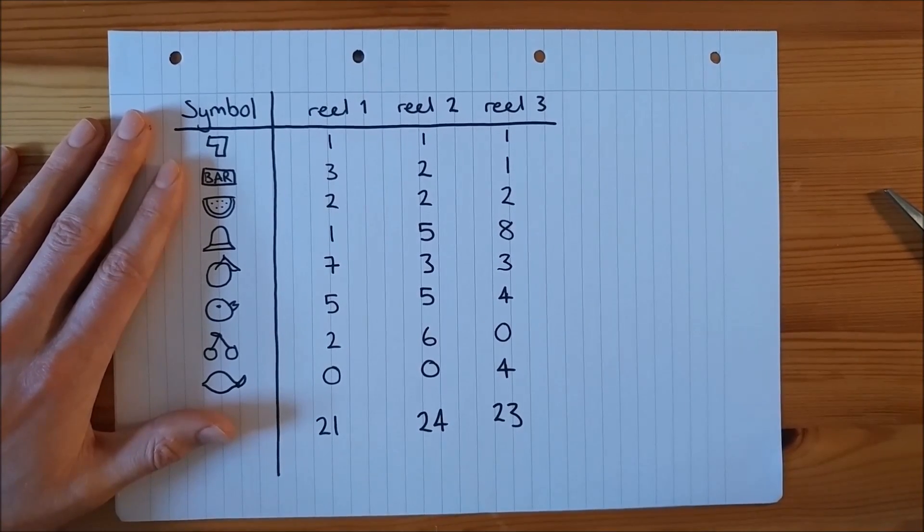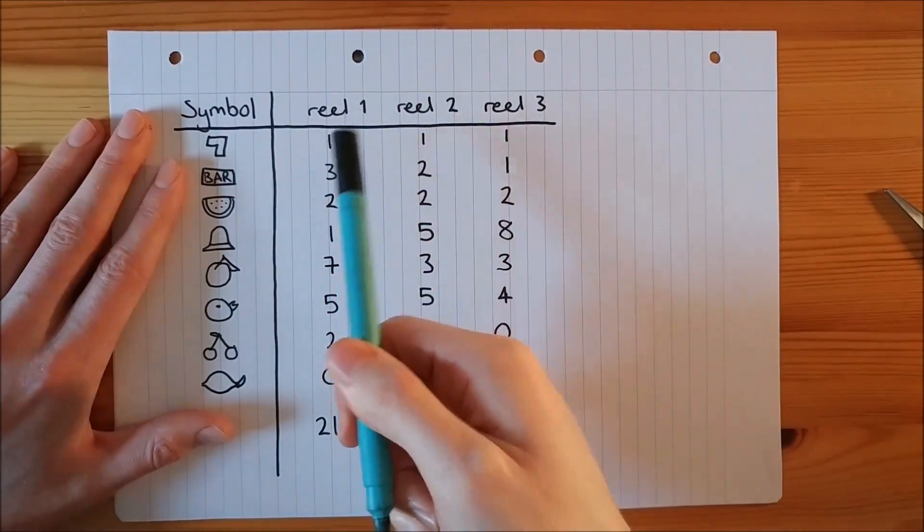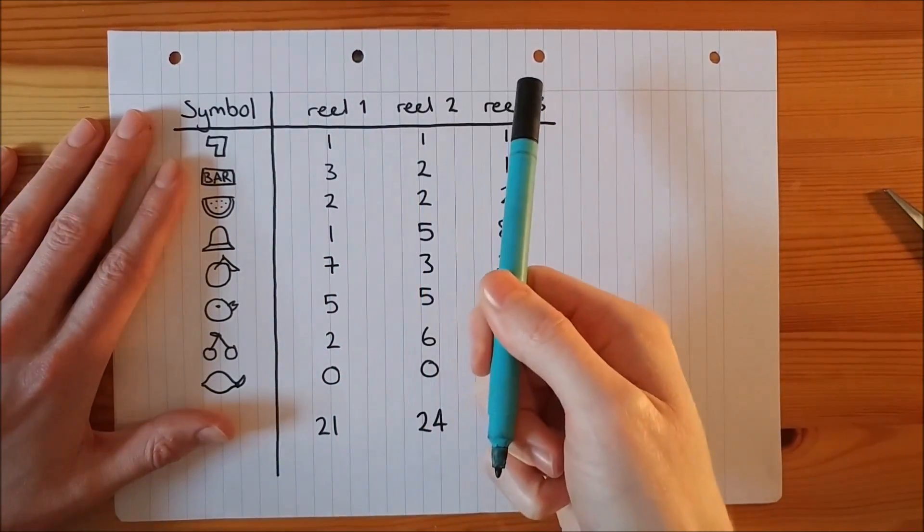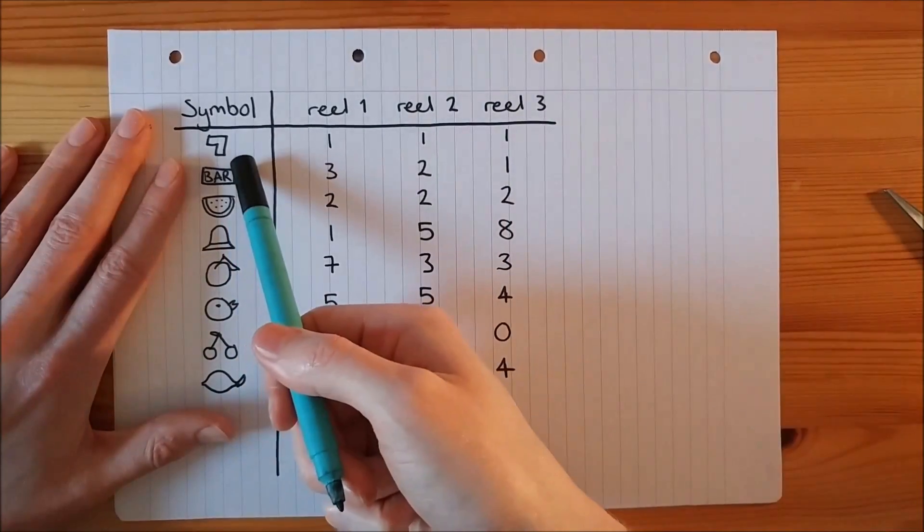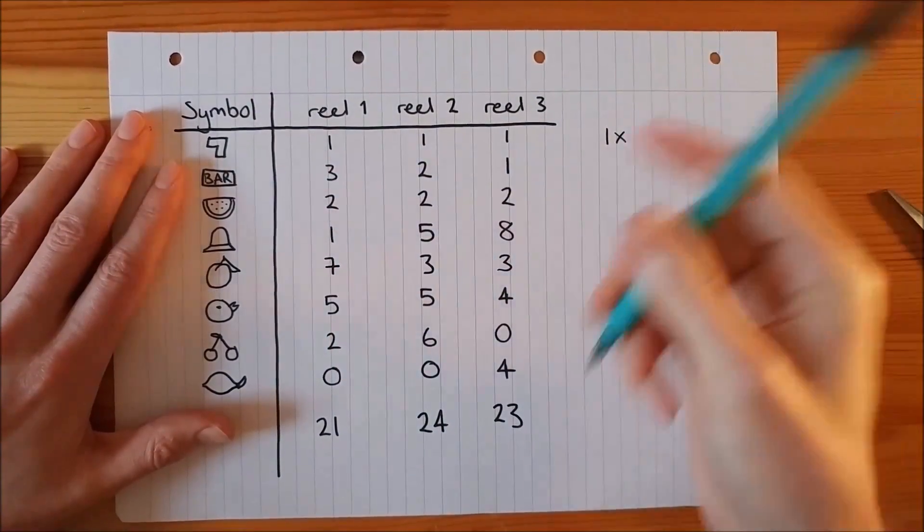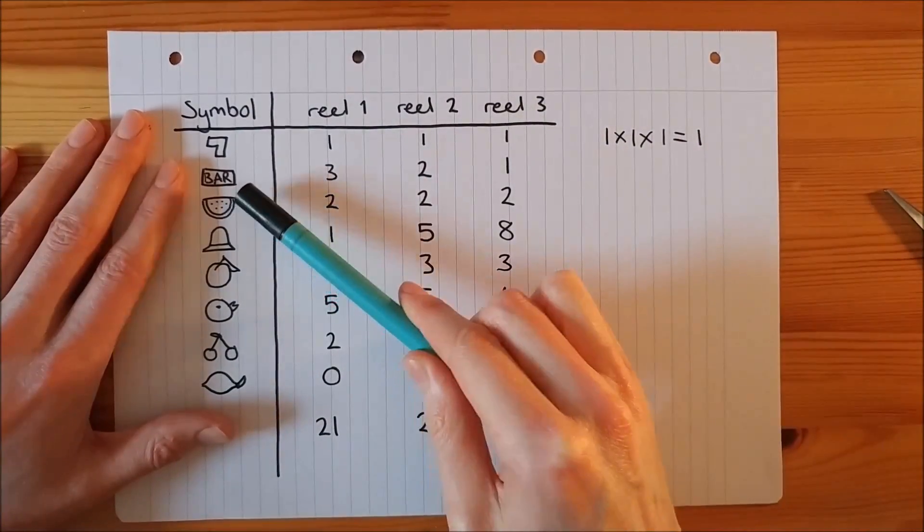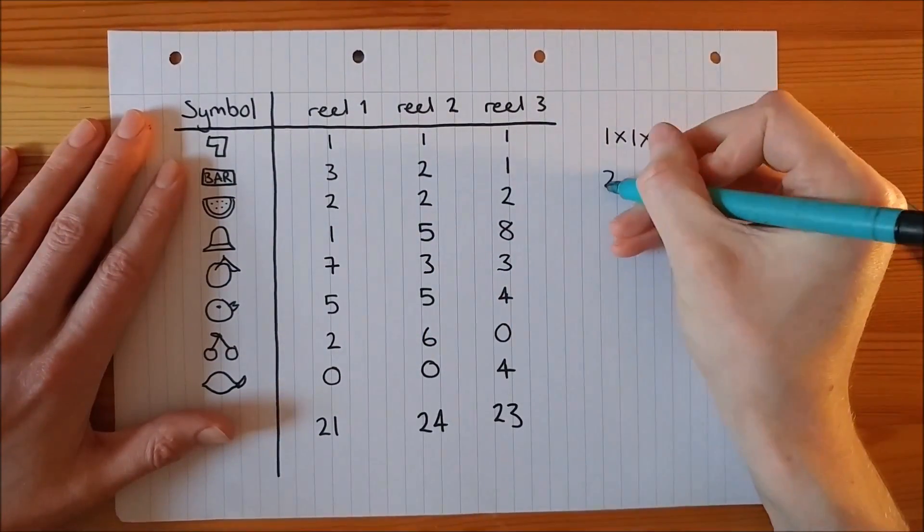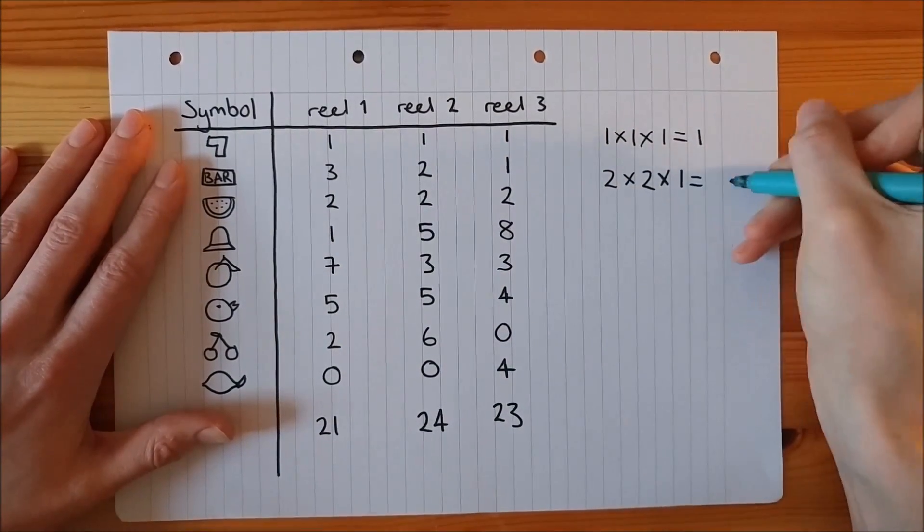The number of ways to get certain lines is given by the frequency of symbol in reel 1, times the frequency of the symbol in reel 2, times the frequency of the symbol in reel 3. For example, the number of ways to get 3 7's is 1 times 1 times 1, which is equal to 1. And the number of ways to get melon melon bar is 2 times 2 times 1, which is equal to 4.